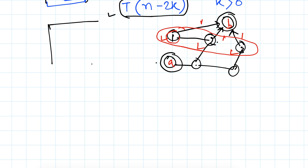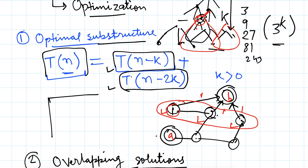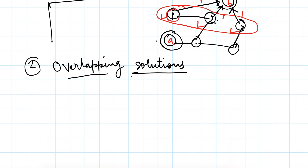The second property is overlapping subproblems. If the solutions are not overlapping, we can still apply dynamic programming but it will not improve the solution, because the main purpose of dynamic programming is to store results that we have already calculated and not redo the problem again and again. If there is no overlap between the sub-problem solutions, we will not gain anything from dynamic programming.